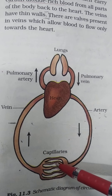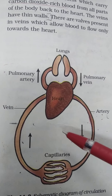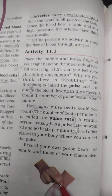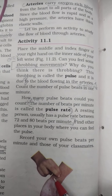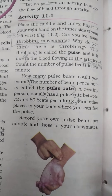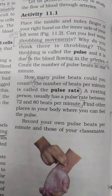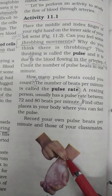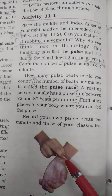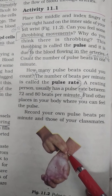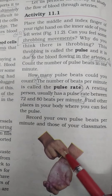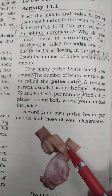So the three types of blood vessels are veins, arteries, and capillaries. When you place your middle and index finger of your right hand on the inner side of your left wrist, you feel a throbbing movement. This throbbing movement is known as the pulse, and it is due to blood flowing in the arteries. When you count the number of beats per minute, that is known as your pulse rate.